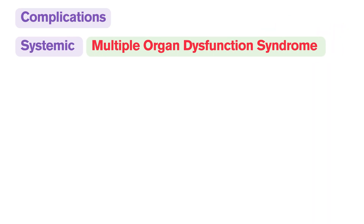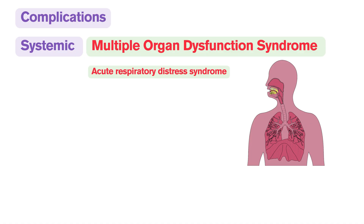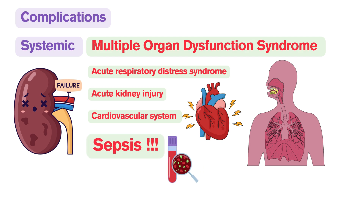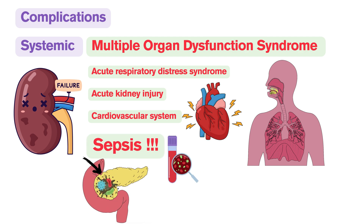Multiple organ dysfunction syndrome is the most feared systemic complication and the leading cause of death in severe acute pancreatitis. It can affect the respiratory system — acute respiratory distress syndrome — the renal system — acute kidney injury — or the cardiovascular system. Sepsis and septic shock can result from infected necrosis found on the pancreas, and it is a life-threatening condition.